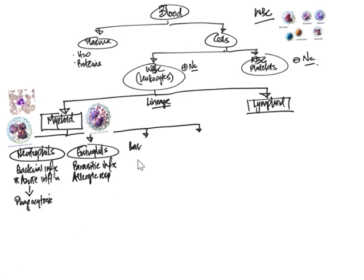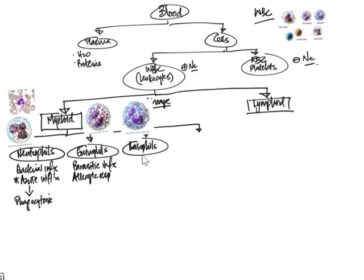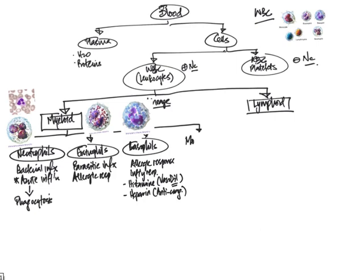The next cell that we're going to look at is the basophil. Baso refers to bluish, so as you can work it out, these cells usually have a blue appearance because the cytoplasmic granules are often blue. The nucleus may be lobed, but the nuclei are often very hard to find because the granules are so dense. Basophils, like eosinophils, are also important in the allergic response. They also play an important role in the inflammatory response because they produce histamine, which is responsible for vasodilation. If you remember, vasodilation is one of the early vascular events in inflammation. They also release heparin, which is an anticoagulant.